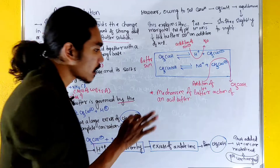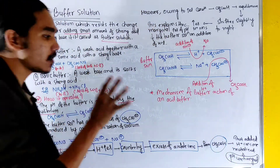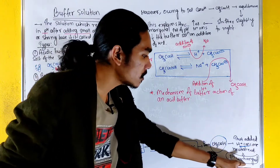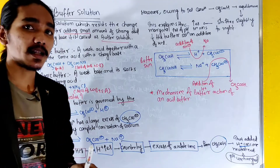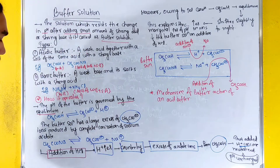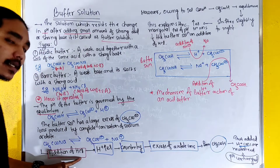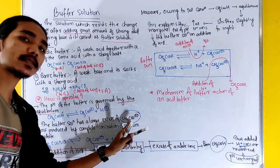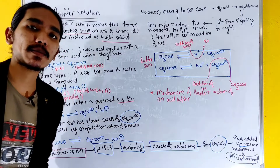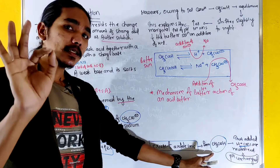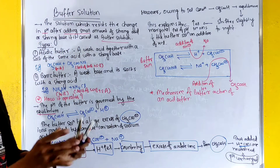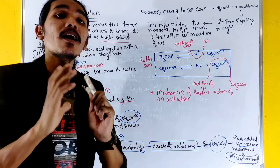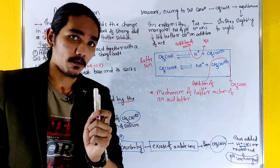The acetate ions react against the added H+ ions and neutralize them. Because the H+ ions are consumed, the overall pH remains essentially unchanged. The equilibrium conditions are maintained and the final pH remains unchanged.